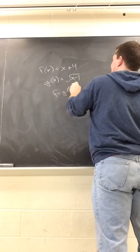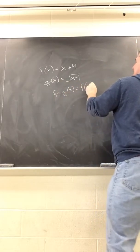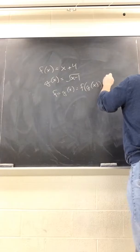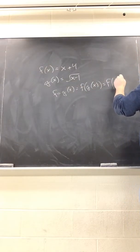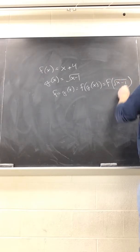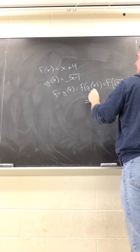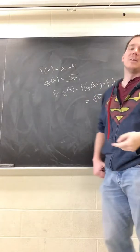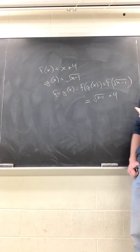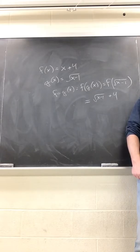F circle g of x equals f of g of x, which is f of square root of x minus 1. When you apply that to f, you get the square root of x minus 1 plus 4. That's clearly not x, so they're clearly not inverses of one another.